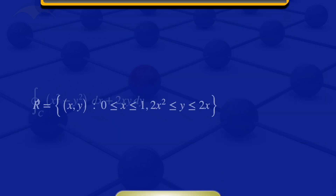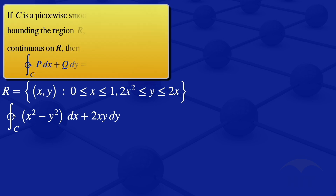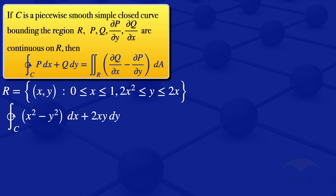We are given that line integral, and to evaluate it I'm going to use Green's theorem. Green's theorem states that if C is a piecewise smooth simple closed curve bounding the region R, and P, Q, the partial derivative of P with respect to y, and the partial derivative of Q with respect to x are continuous on the region R, then the line integral along the closed curve C in the positive direction of P dx plus Q dy equals the double integral over the region R of the partial derivative of Q with respect to x minus the partial derivative of P with respect to y, times dA.